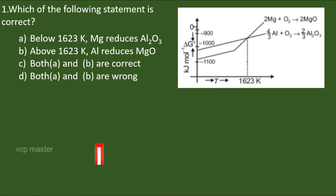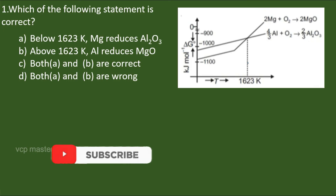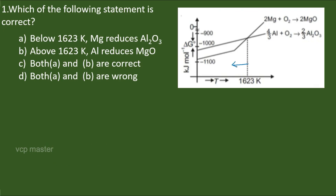Let us see some questions based on the Ellingham diagram. Question 1: Which of the following statements is correct? From the graph, below 1623 K the magnesium line is below the aluminium oxide line, so magnesium can reduce aluminium oxide below 1623 K. Above 1623 K, the aluminium line is below the magnesium oxide line, so aluminium can reduce magnesium oxide above 1623 K. The correct answer is both A and B.